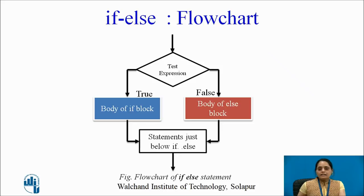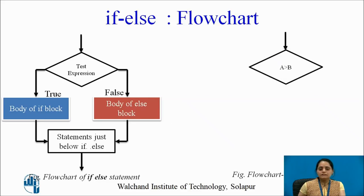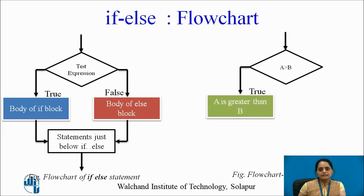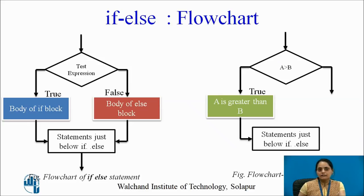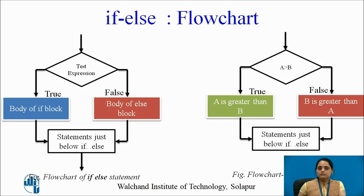Let us take an example: given two numbers 10 and 15, which one is greater? You can say 15 is the greatest. So how do we implement this in the program? I need to compare two numbers A and B. If A is greater, I will say A is greater; and if A is not greater, that means B is greater than A. Here we observe a two-way decision making scenario, so we go for using the if-else statement.